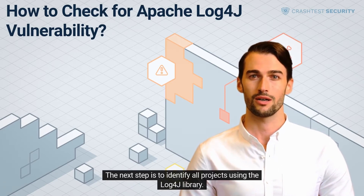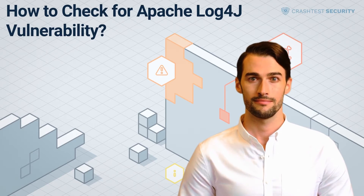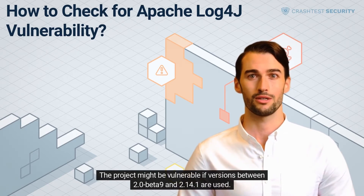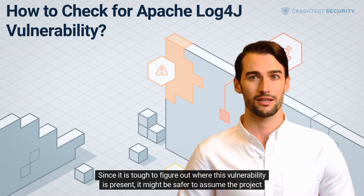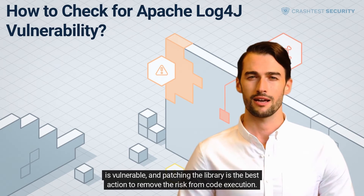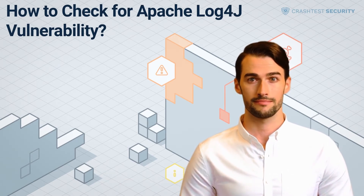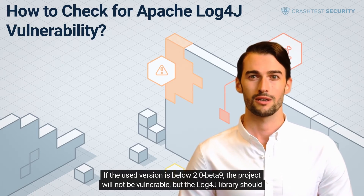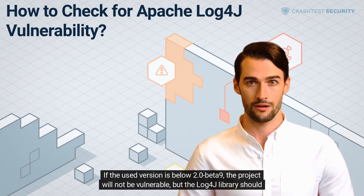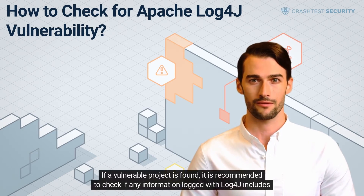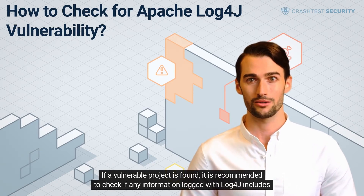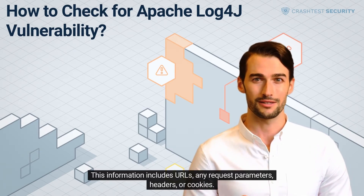The next step is to identify all projects using the Log4j library. The project might be vulnerable if versions between 2.0 beta 9 and 2.14.1 are used. Since it is tough to figure out exactly where this vulnerability is present, it might be safer to assume the project is vulnerable and patch the library to remove the risk of code execution. If the used version is below 2.0 beta 9, the project will not be vulnerable, but the Log4j library should still be updated because versions in the 1.x range are outdated and no longer receive updates. If a vulnerable project is found, it is recommended to check if any information logged with Log4j includes data that the user can manipulate, such as URLs.